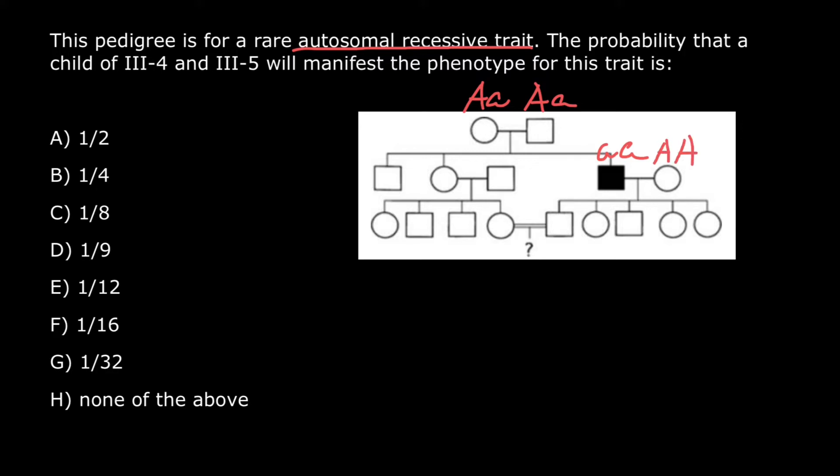So genotype of this female is going to be capital A and capital A. And this tells us that all children of this couple are going to be obligate heterozygous, so would have from one side dominant allele and from father side recessive allele. So all these children are obligate carriers. Now we know the genotype of one parent.